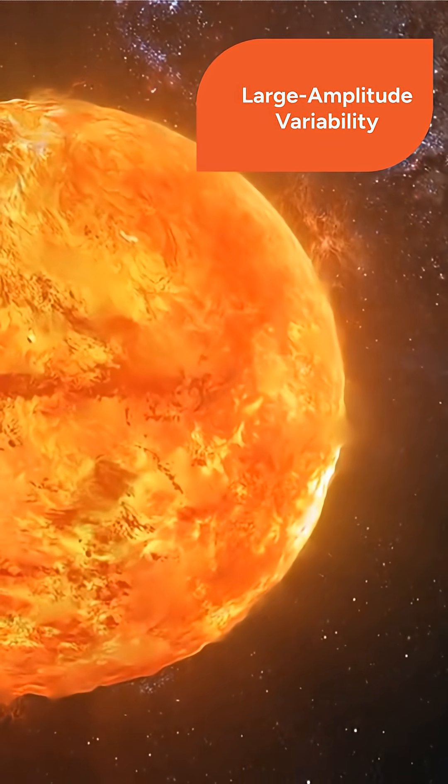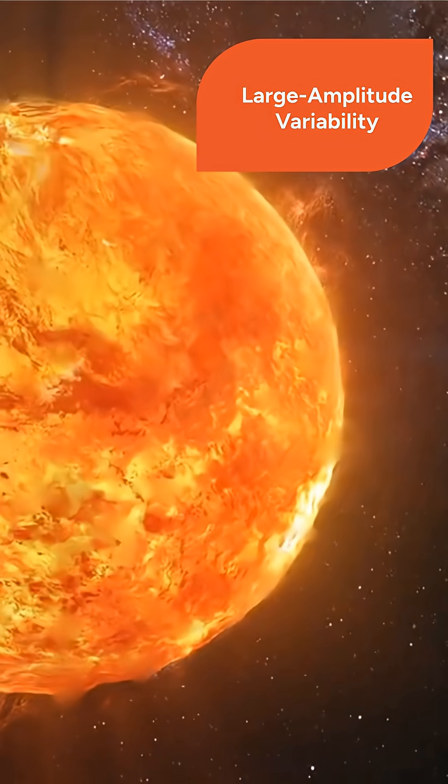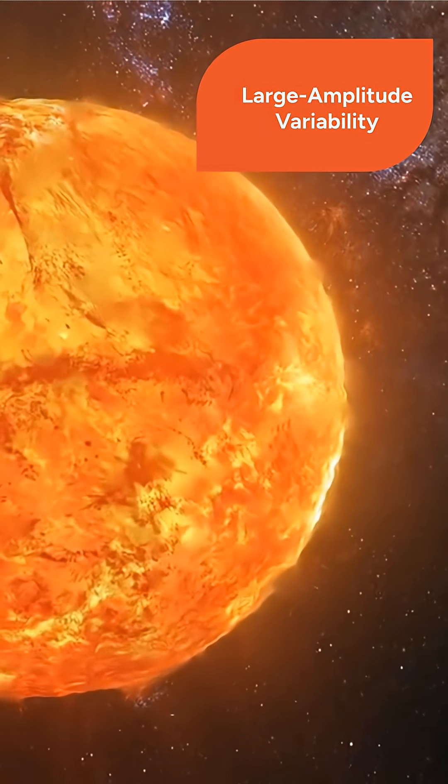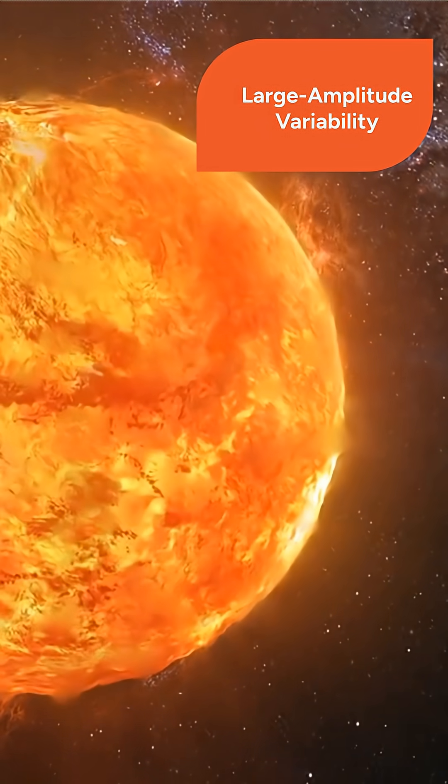VHS-1256b exhibits extremely high large amplitude variability, meaning its brightness significantly changes over time, signaling dramatic atmospheric features like giant dust storms.